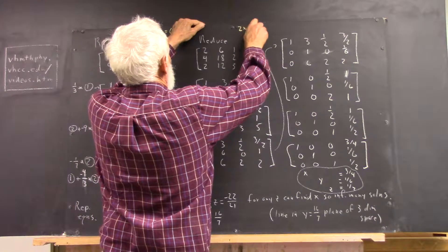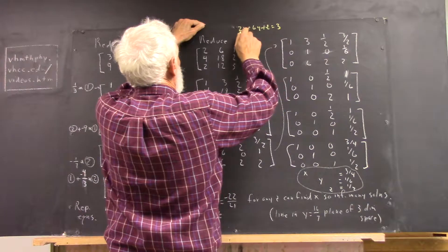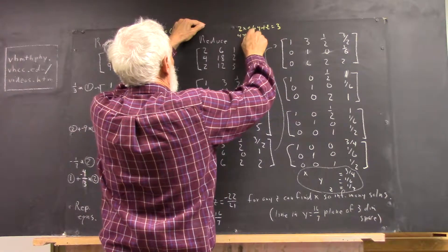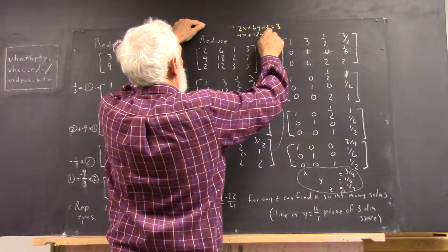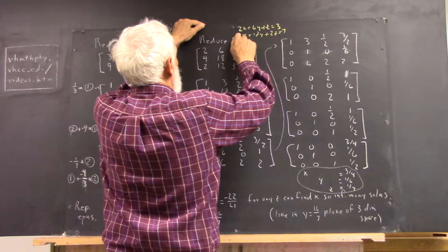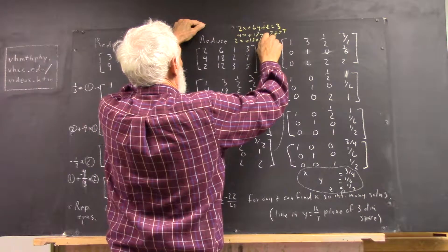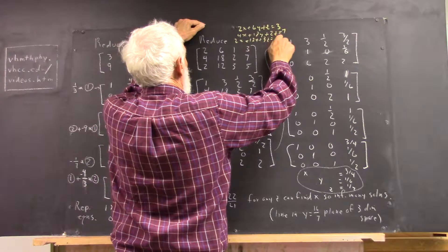So if this system is written out, this is 2x plus 6y plus z equals 3, 4x plus 18y plus 2z equals 7, and 2x plus 12y plus 3z equals 5.